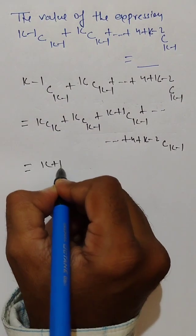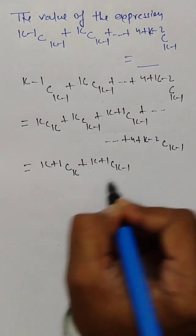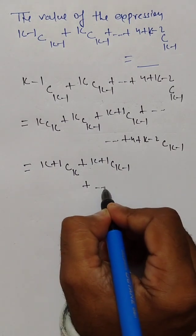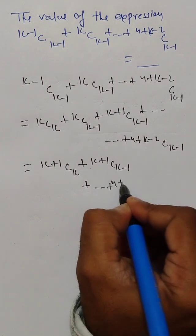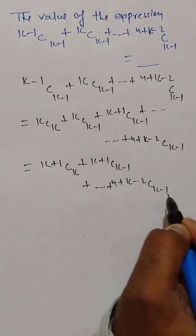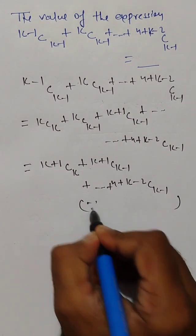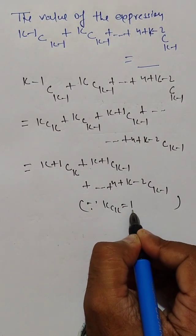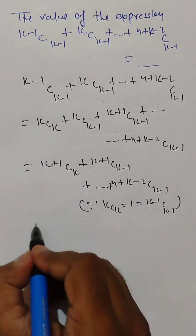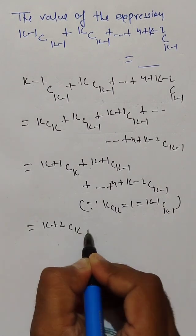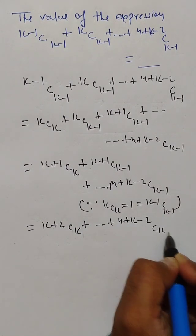Now this is equal to (k+1)C(k) + (k+1)C(k-1) + ... up to (n+k-2)C(k-1). Here we have used the concept that kC(k) = 1, and this is equal to (k-1)C(k-1). Now this is equal to (k+2)C(k) + ... up to (n+k-2)C(k-1).